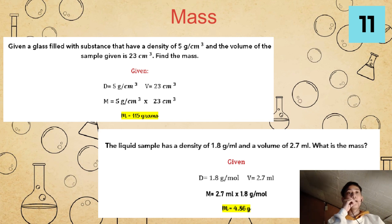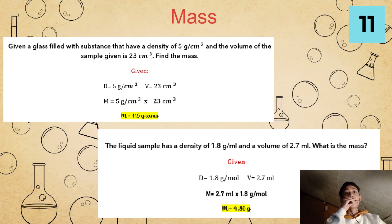For our example number two: a liquid sample has a density of 1.8 grams per milliliter and a volume of 2.7 milliliters. What is the mass? Given: density equals 1.8 grams per milliliter, volume equals 2.7 milliliters. Using mass equals density times volume, we substitute: mass equals 2.7 milliliters times 1.8 grams per milliliter. It will become mass equals 4.86 grams, and that is our final answer.